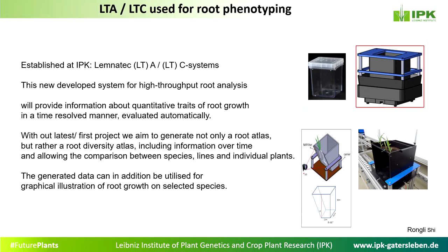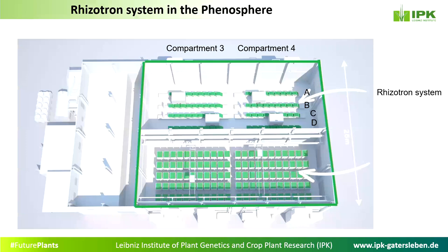What is also very important is to document and illustrate data. The data generated can be used for graphical illustration directly on root growth, particularly for selected species. You have seen our phenosphere — compartments three and four can be separated. In the front is our preparation room where the risotrons are prepared and filled, and after transferring them into compartments three and four, we are able to plant directly onto the system.